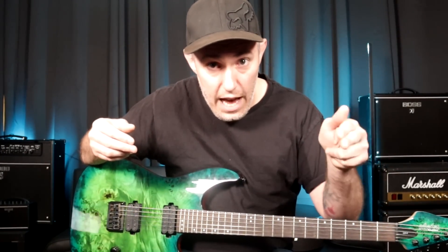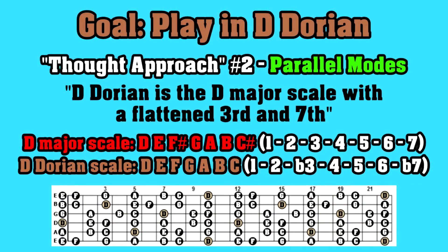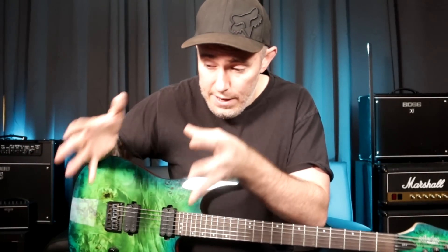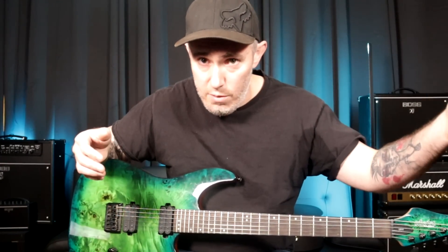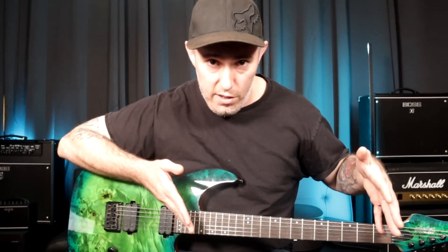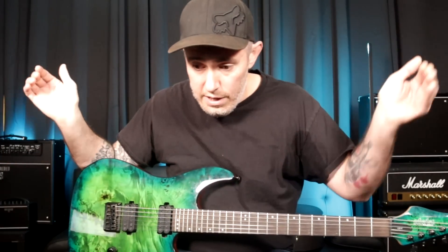I can also arrive at the same goal by taking the parallel approach. I take the D major scale — formula: 1, 2, 3, 4, 5, 6, 7. The major scale is the one and only default scale to which all other scale formulas are compared. I look at the Dorian scale formula: 1, 2, flat 3, 4, 5, 6, flat 7. Applying that means I take the third and seventh notes and flatten them by one half step. The end result is the D-Dorian scale. Both thought approaches led to the exact same end goal — whether I think 'same notes as C major' or 'D major with a flattened third and seventh,' I get to the same place either way.